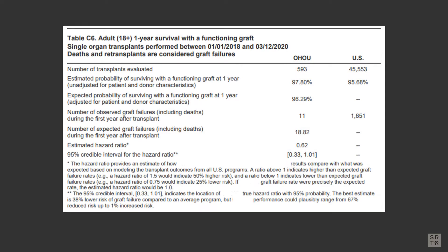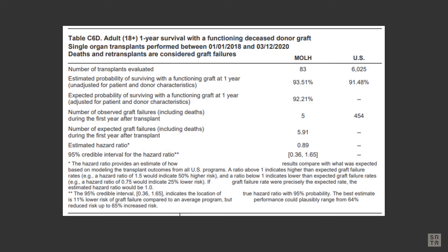The five-tier assessment for one-year organ survival is derived from the estimated hazard ratio for first-year graft survival, as reported in Table C6 of the program-specific reports, or PSRs, for kidney and liver programs, and Table C6D for all other organs.